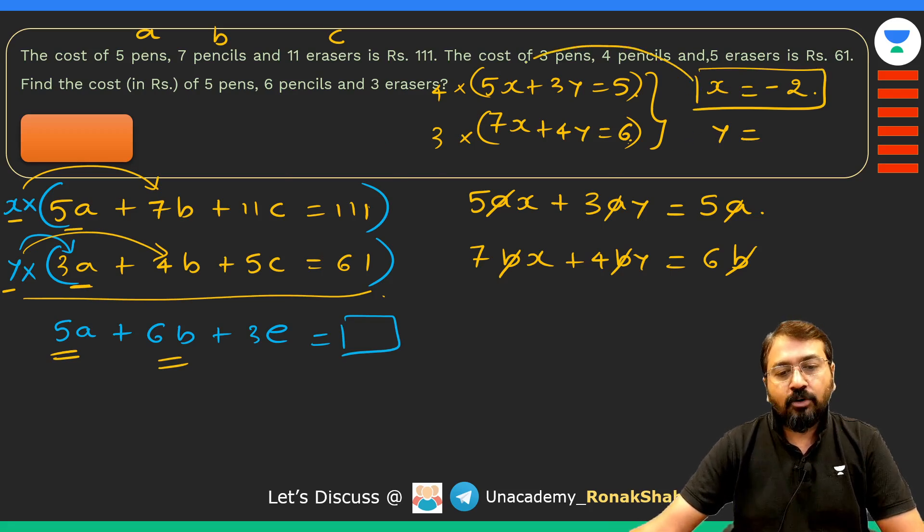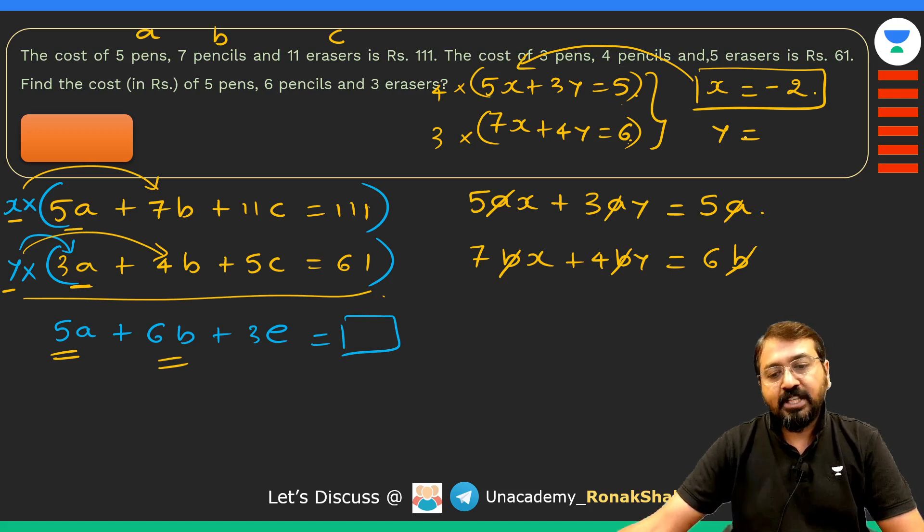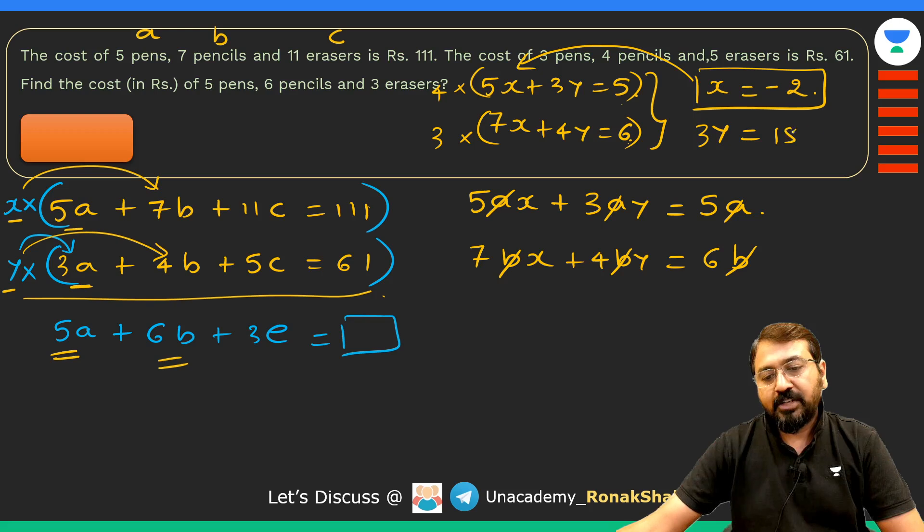What will be the value of y? Just plug in this value of x. You will get 5 times minus 2 is minus 10, add it to the other side so you will get 3y = 15, or y = 5. So we got value of y as 5.